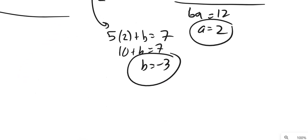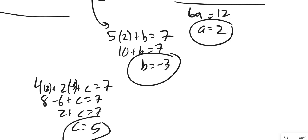4a2, 4217. So, a's 2, b's negative 3, and we want to find c. So, 8 minus 6 plus c is 7. 8 minus 6 is 2. Subtract the c, and it looks like c is 5.